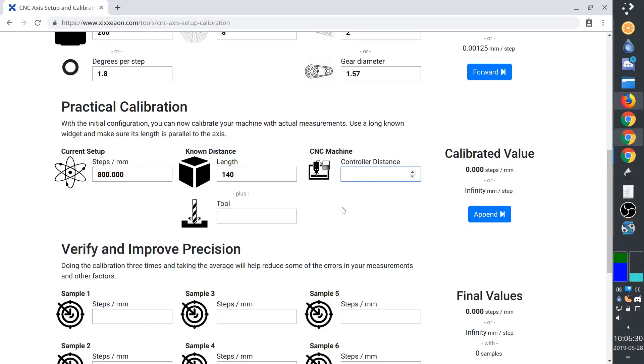Input your current setup and the known length. We don't need to account for the tool with this method. And then input how far the machine thinks it moved. We get a calibrated value of 796.189 steps per millimeter.